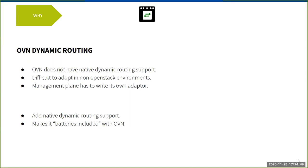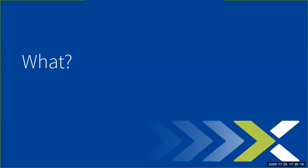OVN doesn't natively support dynamic routing protocols. OpenStack has some plugins for solving these problems but we don't use OpenStack. We have our own custom software for managing our virtual infrastructure, and as a result we had to build our own integration between OVN and the BGP speaker. After operating the first version of this service for a few years, we're looking to revamp it. We thought it would be great for OVN to take a more batteries-included approach to dynamic routing, and so we spent some time looking at how we might integrate the support into OVN natively. I'll hand it off to Ankur who did all the exploratory work in this project.